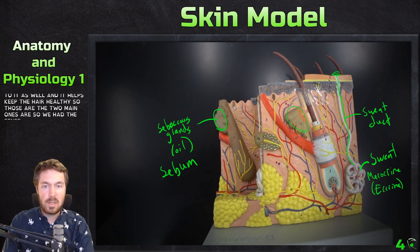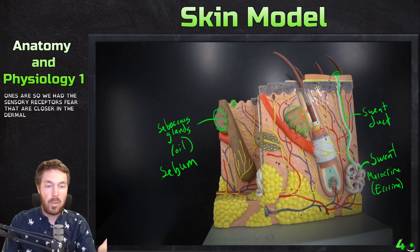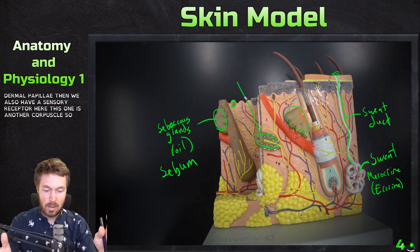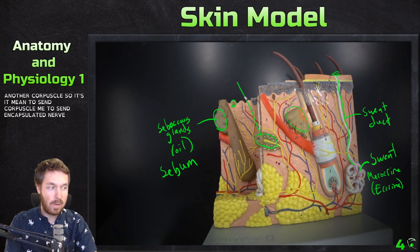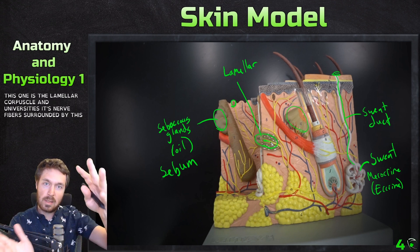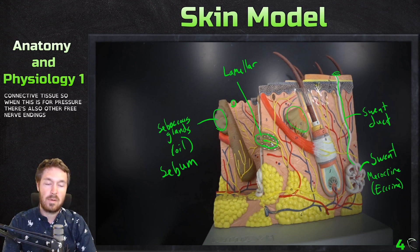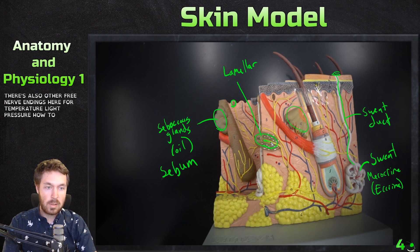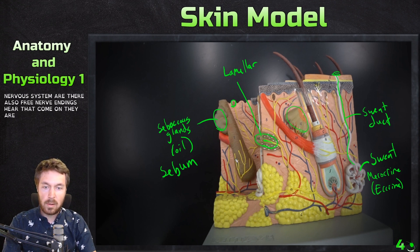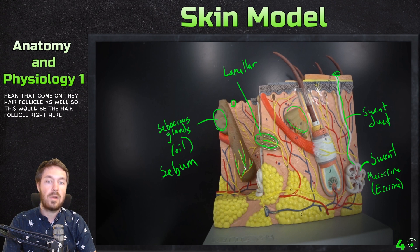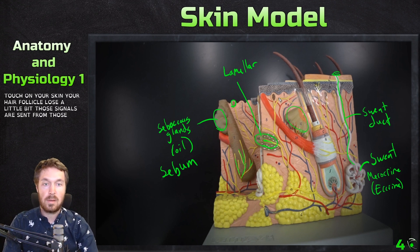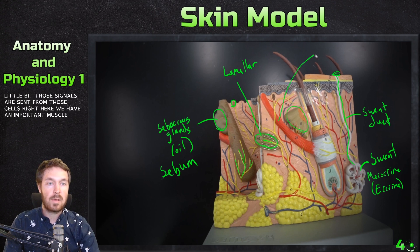There are sensory receptors in the dermal papilla region, and deeper in the dermis we find the lamellar corpuscle — an encapsulated nerve fiber surrounded by connective tissue layers, responsive to pressure. There are also free nerve endings for temperature, light pressure, and other sensations, which we'll discuss more in the nervous system unit. Free nerve endings also wrap around the hair follicle, sensing light touch — for example, when a bug lands on your skin and moves a hair.